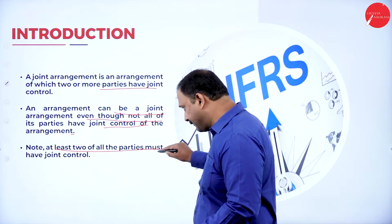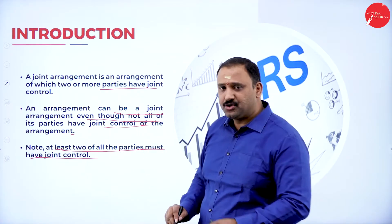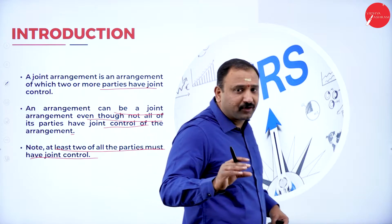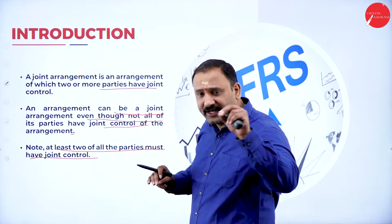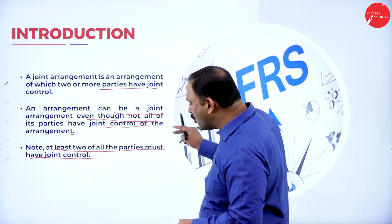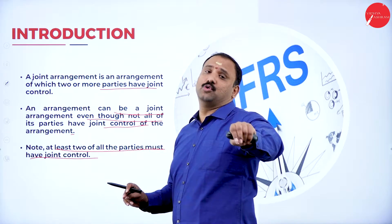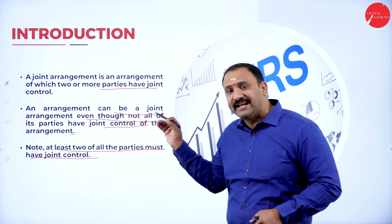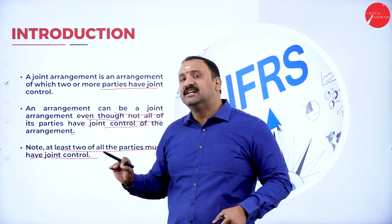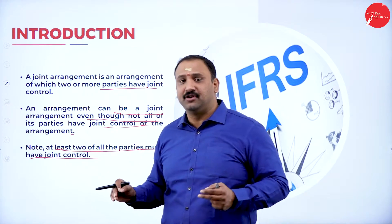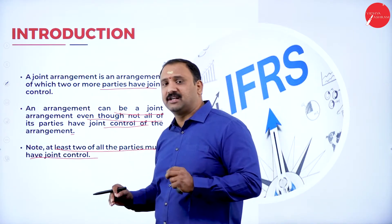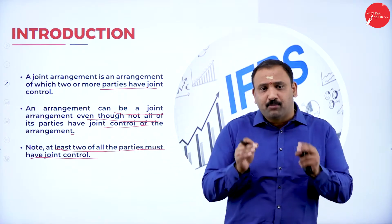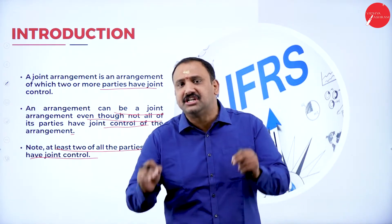At least two of all the parties must have joint control. Assuming there are five or six people who have joined together in terms of controlling an entity, at least two of the parties must have control. The other four persons might not — that's not a problem — but as per the accounting standard, at least two of the parties must have control. When it comes to joint control, both people should show equal concern for the organization.